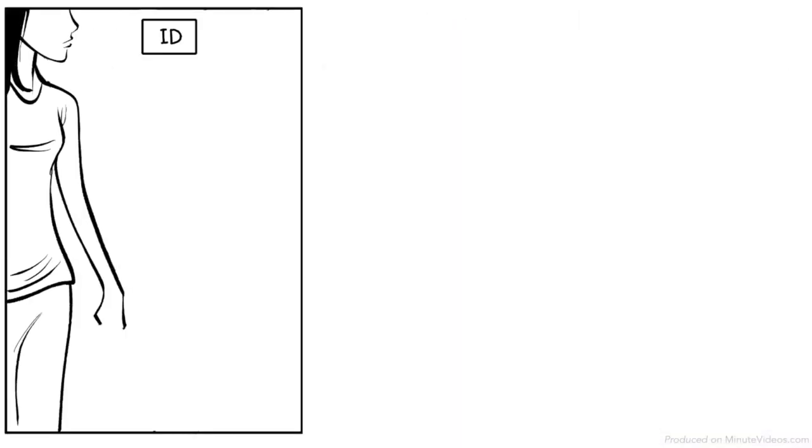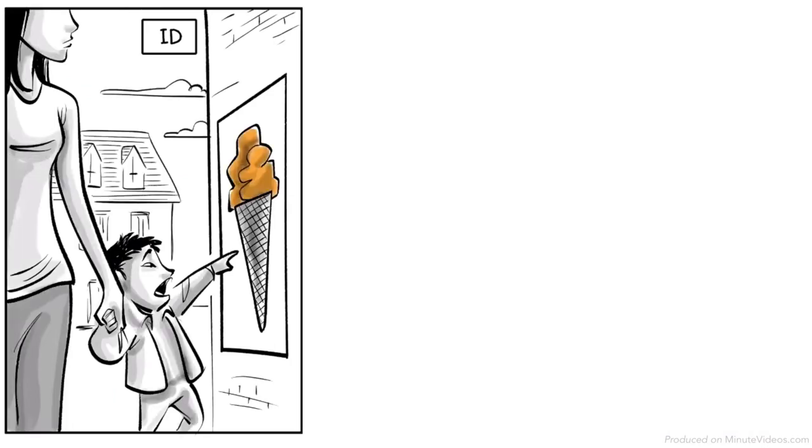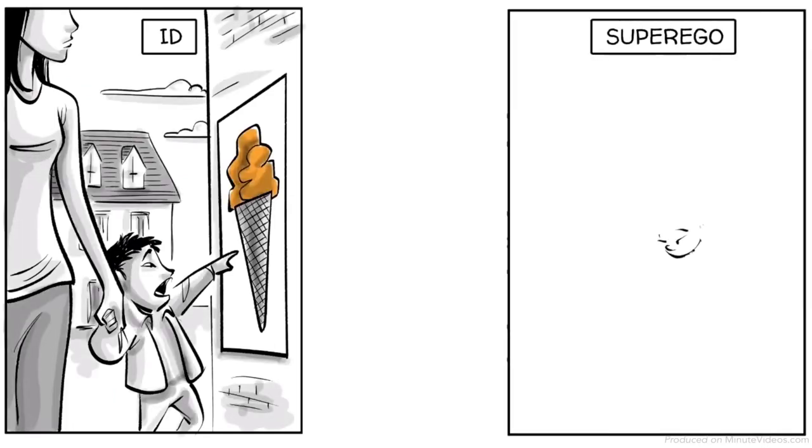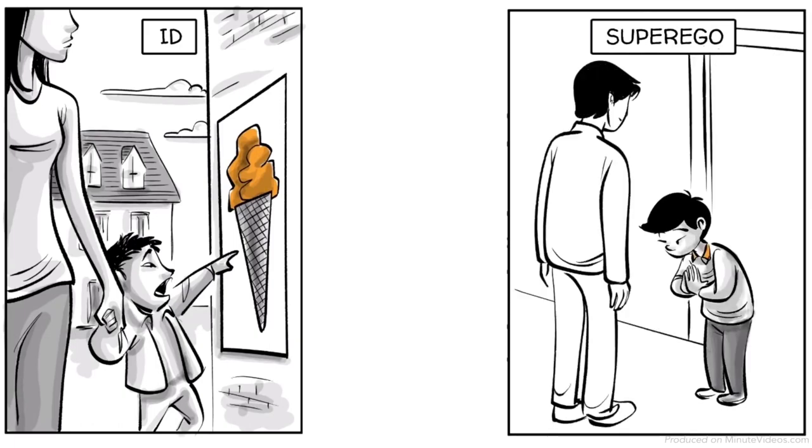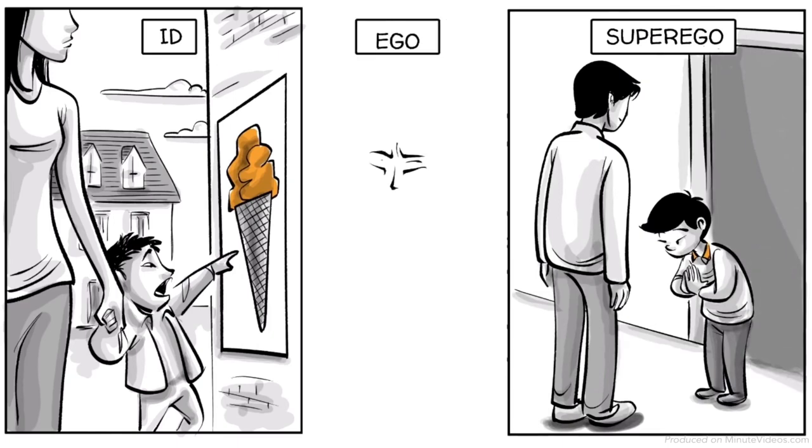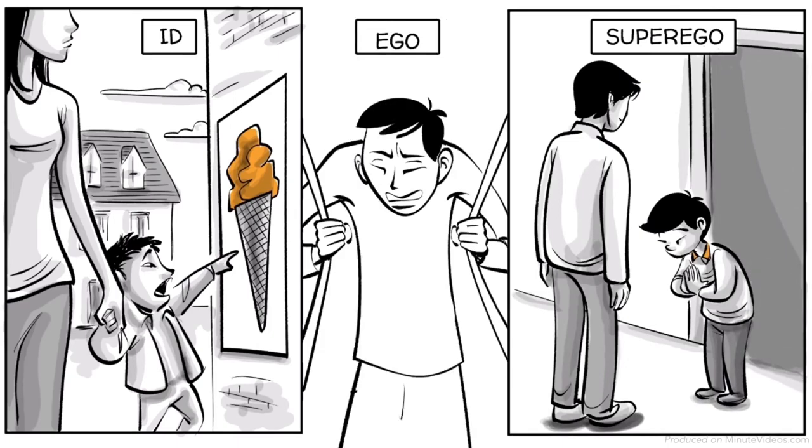Young children are driven by the id and demand immediate satisfaction. At around age seven, we begin to develop a superego and want to become good moral citizens and please others. The ego is formed with adolescence to balance the two forces.